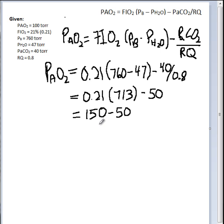So carrying out the next calculation, 21% times 713 gives me approximately 150. Minus 50 equals 100. And the units for all of these are torr.